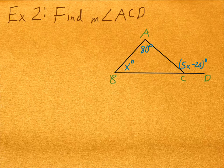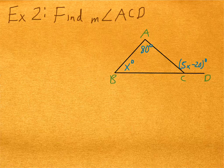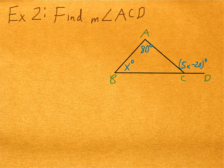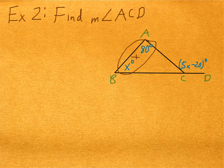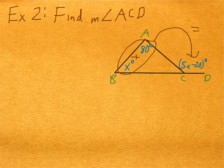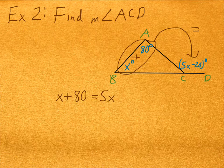In this example two, we're tasked to find the measure of angle ACD. How can we do that? Well, if we apply the exterior angle theorem, we know that those two angles, the remote interior angles, have to add up to be the exterior angle. So I can write an equation to solve for X. I could say X plus 80 is equal to 5X minus 20. Now I just need to solve for X.